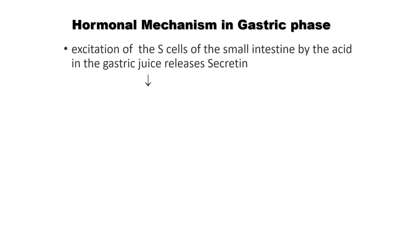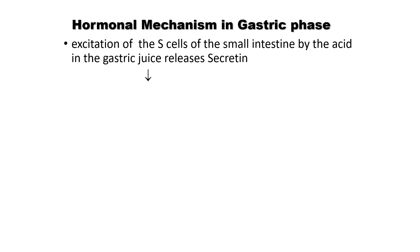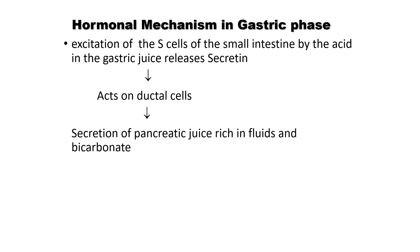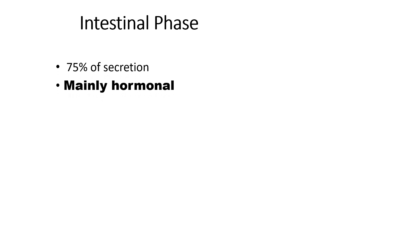In the hormonal mechanism of the gastric phase, acid in the gastric juice releases secretin by exciting the S cells. Secretin acts on the ductal cells, stimulating secretion of pancreatic juice rich in fluids.